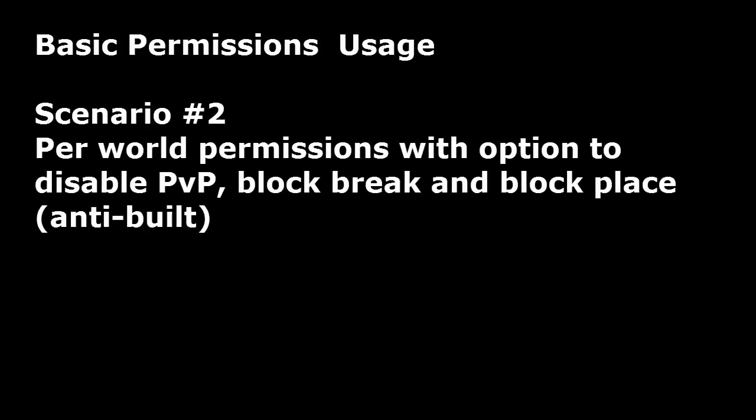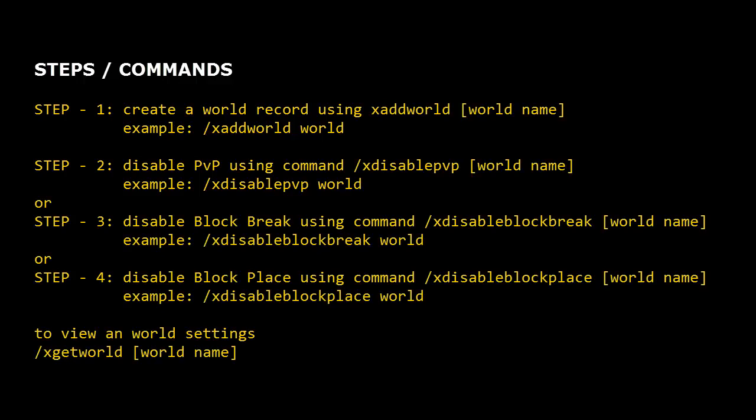Basic permissions usage — scenario number two: per-world permissions, with options to disable PvP, block break, and block place. Step one: create a world record using /addworld [world name]. Step two: disable PvP using /disablepvp [world name]. Step three: disable block break using /disableblockbreak [world name]. Step four: disable block place using /disableblockplace [world name]. To view world settings, use /scrollworld [world name].